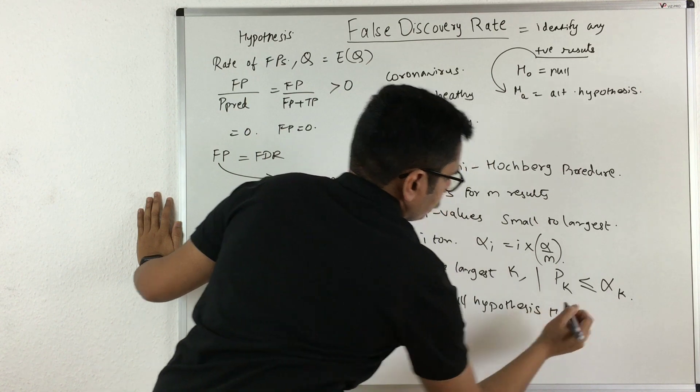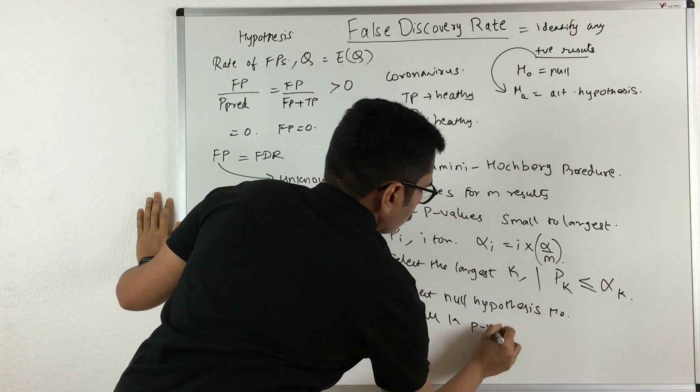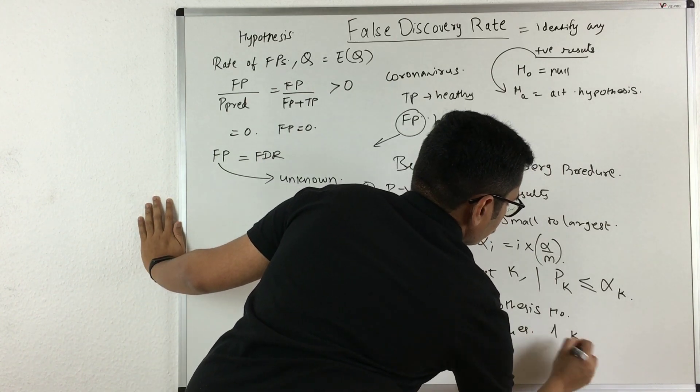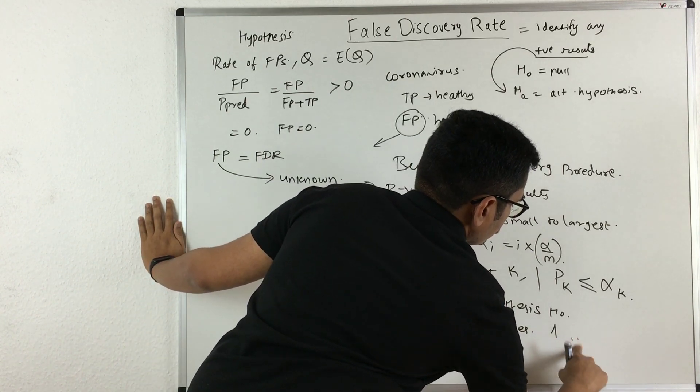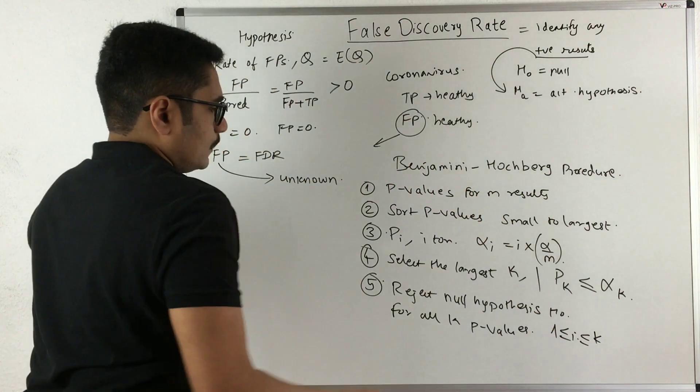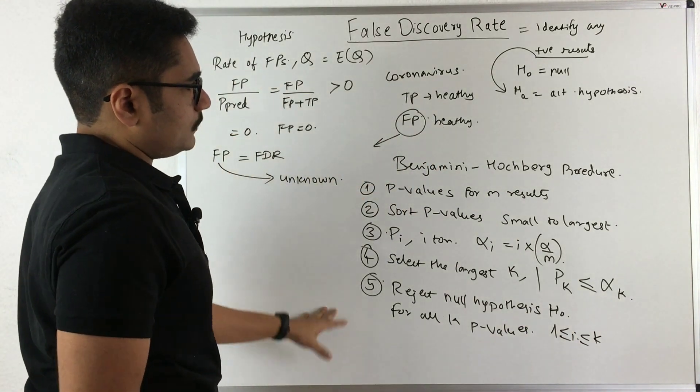That is H0 for all i from 1 to k. You employ this technique to correct the false discovery rate.